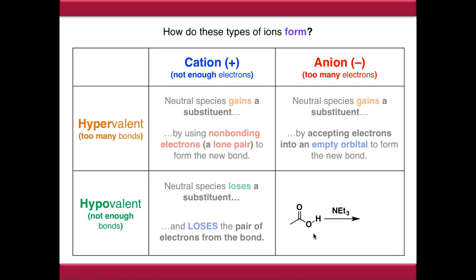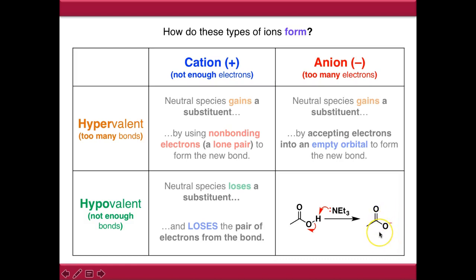We've taken our carboxylic acid and treated it with a mild base in the form of triethylamine, and we are breaking this O-H bond. Oxygen is losing a substituent but it's gaining a pair of electrons from the O-H bond, and as a result we end up with a hypovalent anion. To balance the equation, we've created a hypovalent cation in the form of triethyl ammonium.